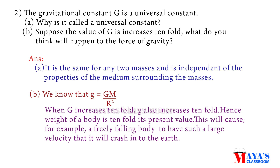If G increases 10-fold, then small g also increases 10-fold. Hence, the weight of a body becomes 10 times its present value. This will cause a freely falling body to have such a large velocity that it will crash into the Earth.